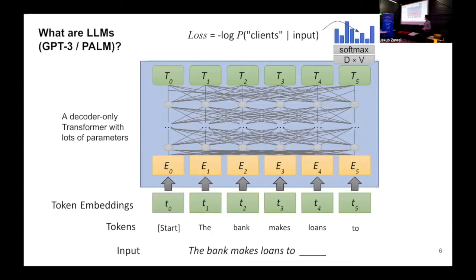What are large language models? You take text, make it into tokens, convert those tokens to vectors, feed those vectors to decoder-only transformers with a lot of parameters. Self-attention computes contextualized vector representations for each token in the input. Then you take one of these vectors, feed it into a linear layer with a softmax, and get a probability distribution — you want the model to put high probability on the token that will complete the sentence. That's how most state-of-the-art models work, with tons of parameters, data, and compute.